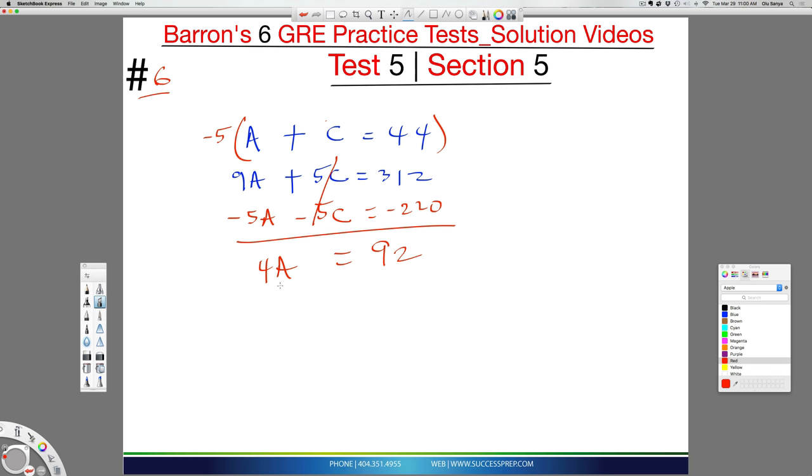Now at this point, you can divide by 4 as well. And when you do that, you create a situation where this gives you 23 and that is your A and that's your answer. So that's how you find A.